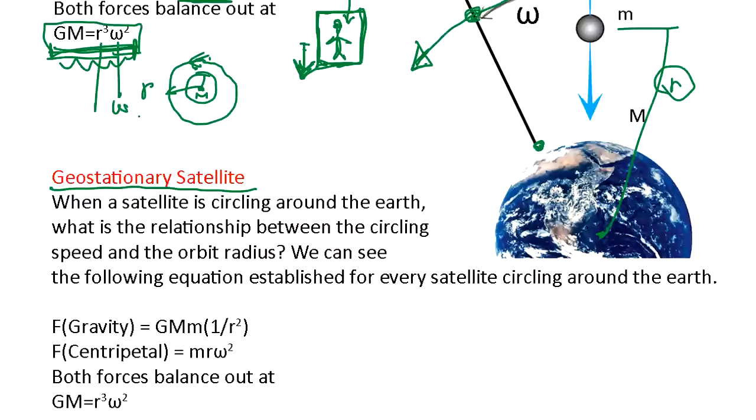Now, how about you want to make a geostationary satellite? Geostationary satellite means, say above you there is a satellite, and the satellite speed is synchronized with Earth's rotation. So you see the satellite at the fixed location all the time. That's a geostationary satellite.